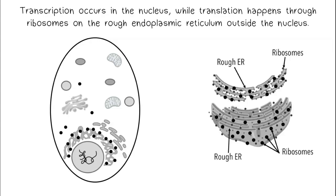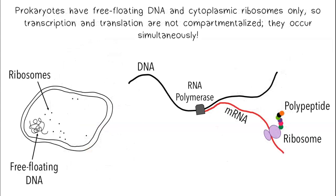Transcription occurs in the nucleus, while translation happens through ribosomes on the rough endoplasmic reticulum outside the nucleus. Prokaryotes have free-floating DNA in cytoplasmic ribosomes only, so transcription and translation are not compartmentalized — they occur simultaneously.